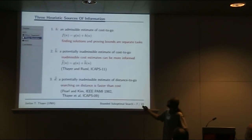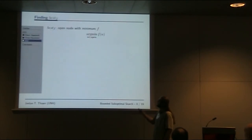The last source of information is d-hat, a potentially inadmissible estimate of the number of actions between the state and the goal. Recall I said earlier, searching on distance is faster than cost. If our goal is to find solutions within the bound as quickly as possible, we want to know what solutions are close to the goal already. d-hat has been around since the eighties. Pearl and Kim suggested it in their A-star epsilon paper. We've been using it for a while. It's very useful.